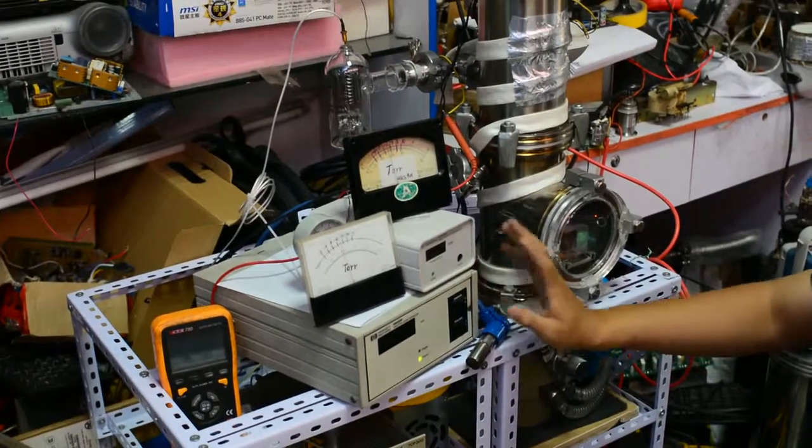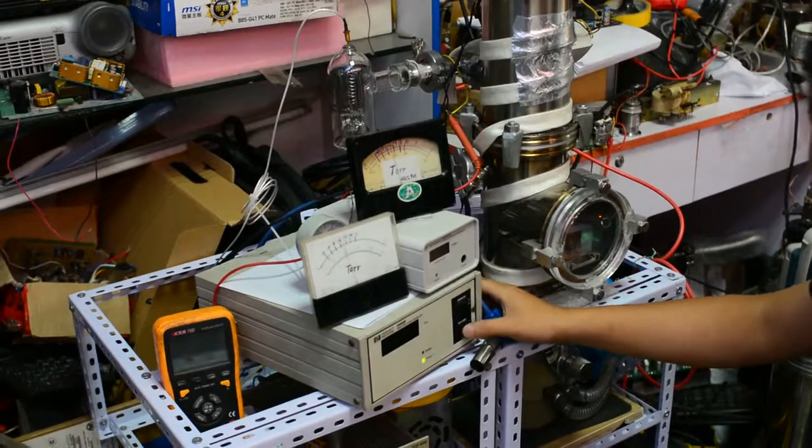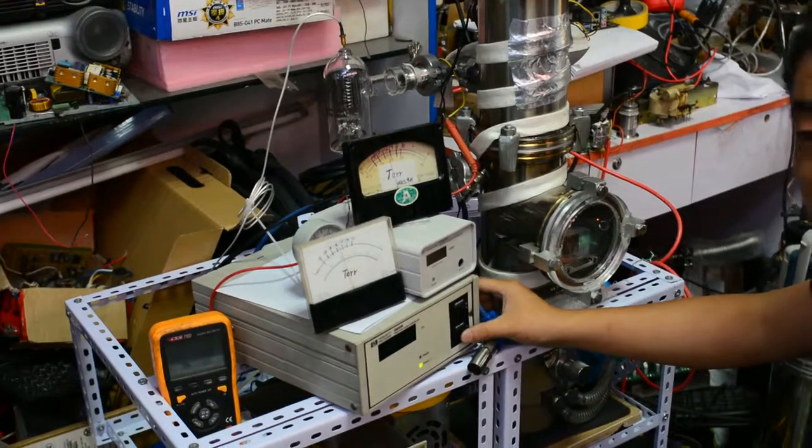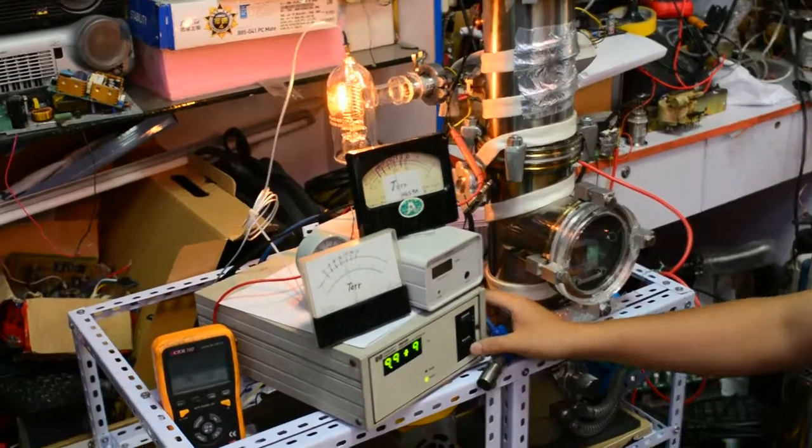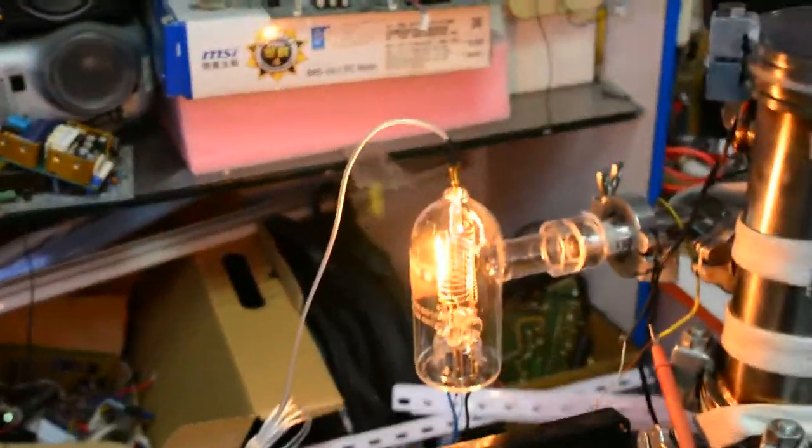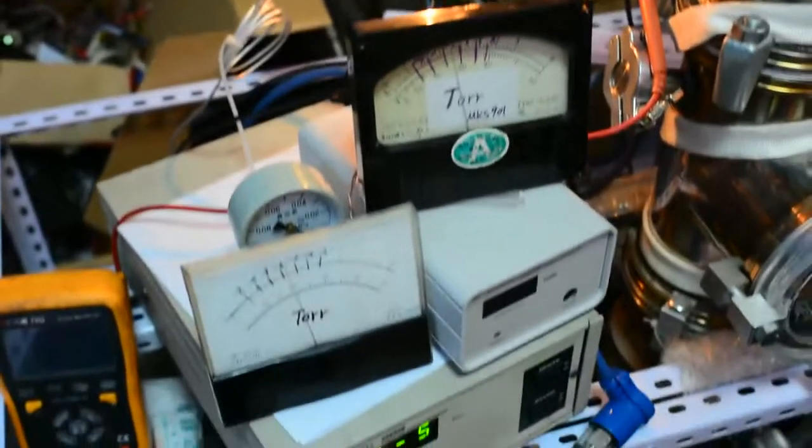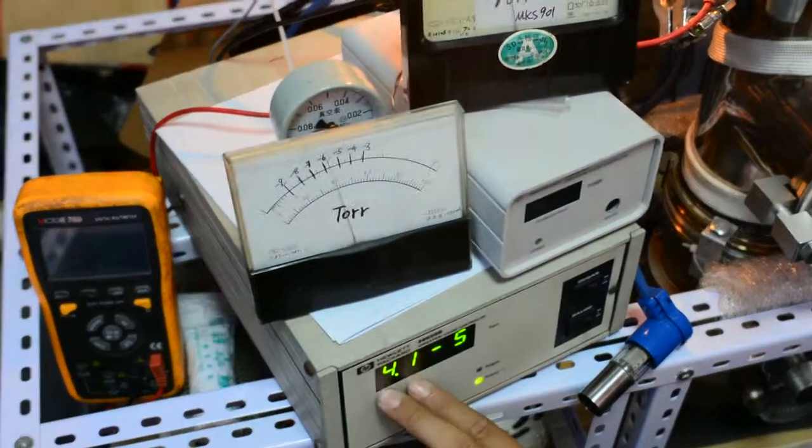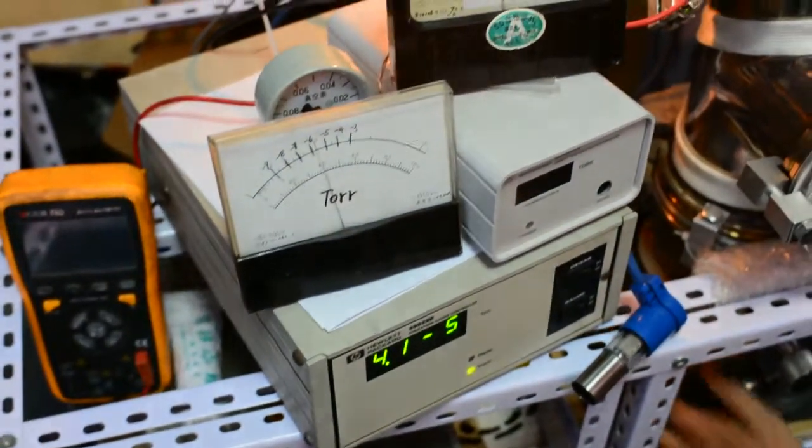Now it is cooling down. I can turn on the ion gauge again. You can see the vacuum level is rising up a little bit, but it is dropping down because the turbo-molecular pump is running.